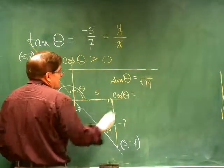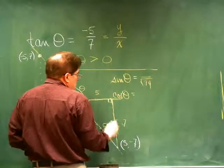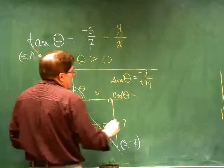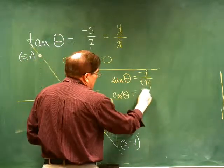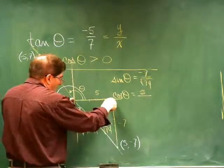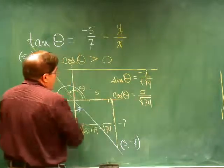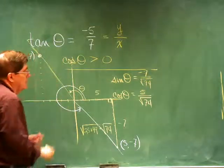So now I know what the sine is, because the sine is the opposite over the hypotenuse, the negative seven over the square root of 74. The cosine is the adjacent five over the square root of 74.